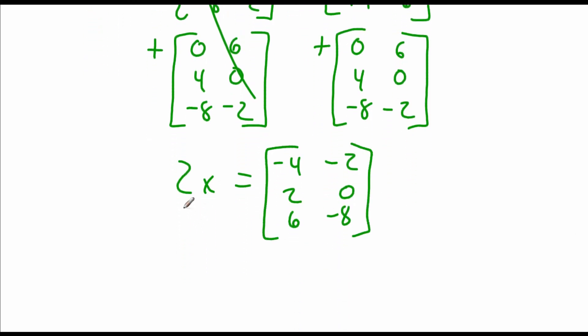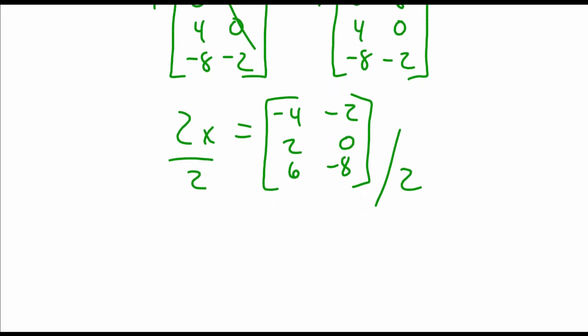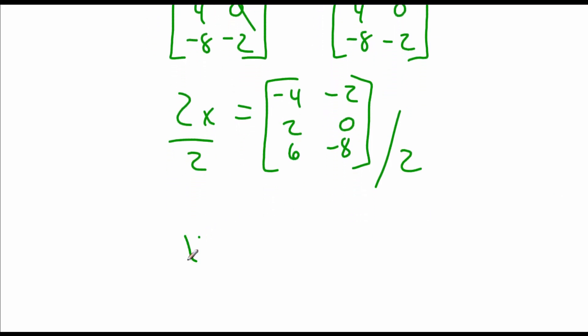Then last step, in order to get x all by itself, we have to divide everything by 2. So just like we can multiply a matrix by a number, we can also divide a matrix by a number. So we are going to divide every single entry in here by 2. So we get negative 2, negative 1, 1, 0, 3, negative 4 as our final answer for matrix x.